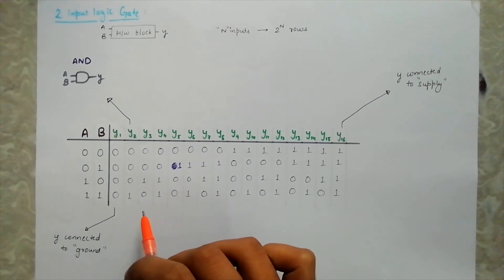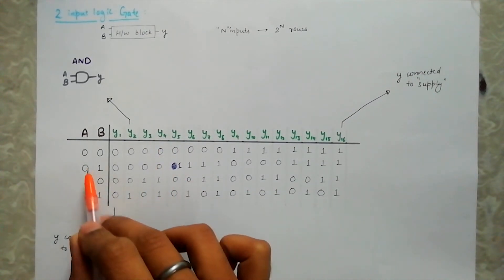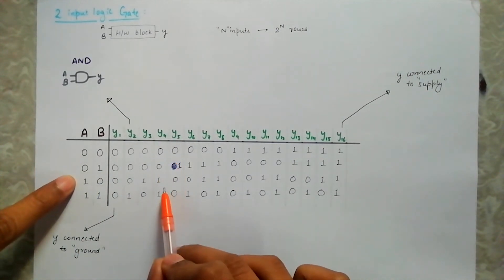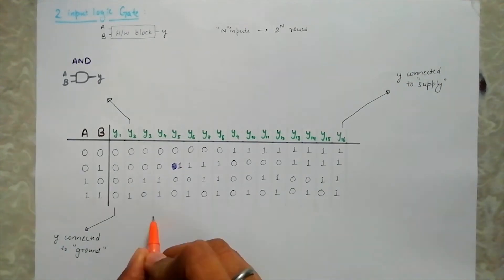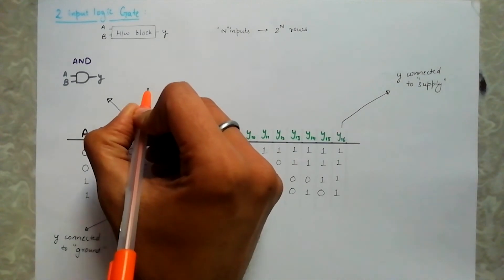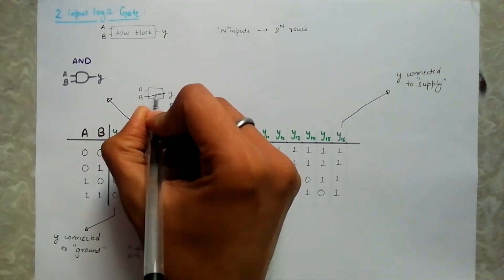For the third case, we don't have any special symbol to represent it. So now let's look at the fourth case. Here we see that the output is the same as the input A. It's as if we shorted the output with A. Let's skip fifth and here we see that the output is the same as B. So similar to fourth, here we have output shorted with B.